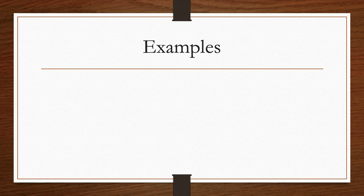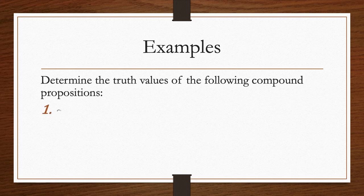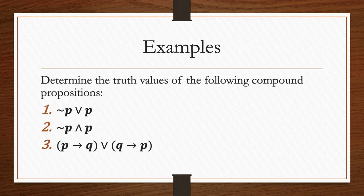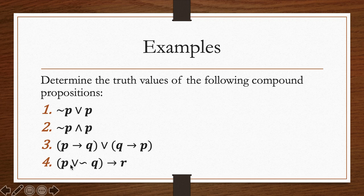In this video we're going to continue and answer example number four from the last video: p or not q implies r, that is, if p or not q then r.